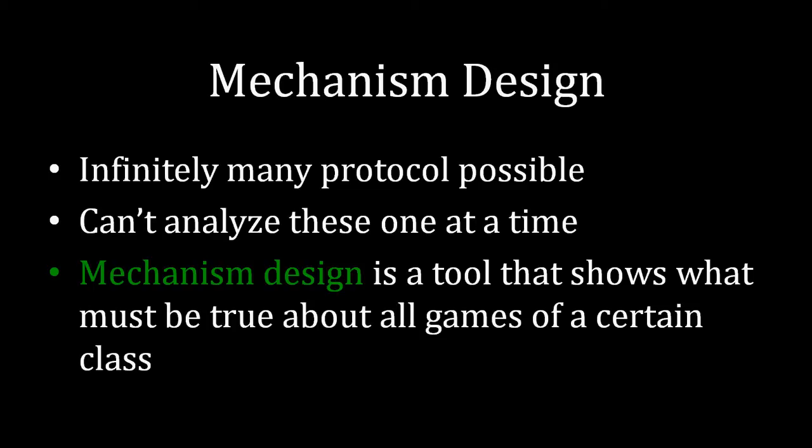The good news is there is a way to analyze all of those things at once. Mechanism design is a tool that shows what must be true in all games of a certain class. Here, the class of games we're interested in are negotiation situations where there's a buyer and a seller of a good, and the buyer must give an amount of money to the seller in exchange for the good. This mechanism design allows us to say something about all possible bargaining protocols at once — and that is pretty worthy of a Nobel Prize. In fact, the people who developed mechanism design won a Nobel Prize for it.